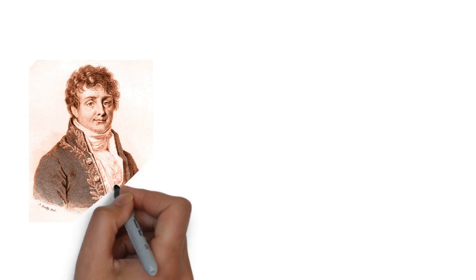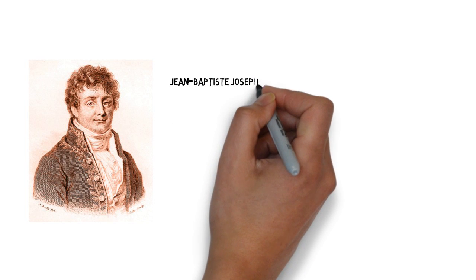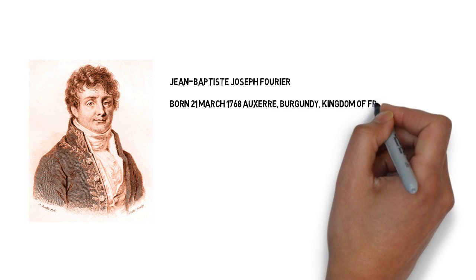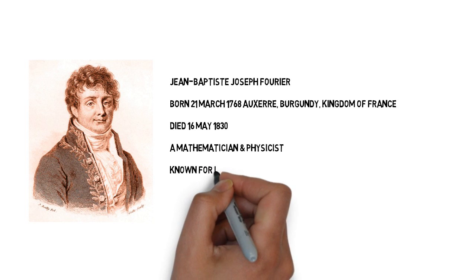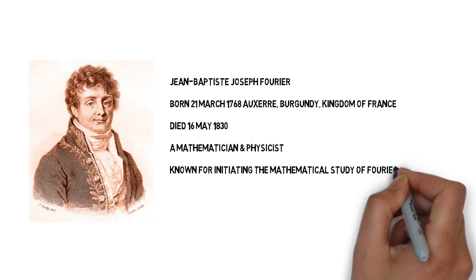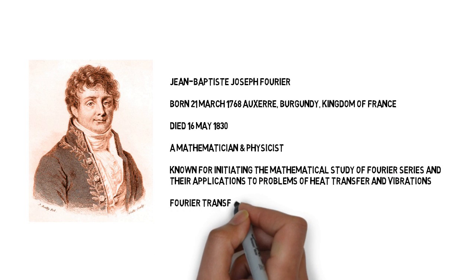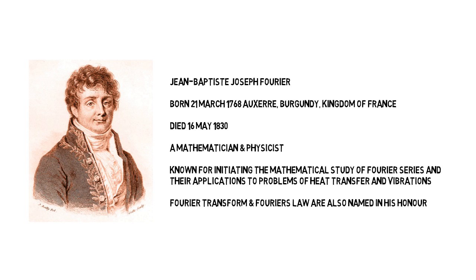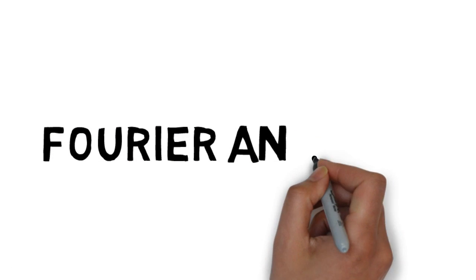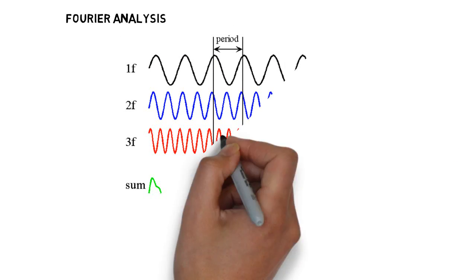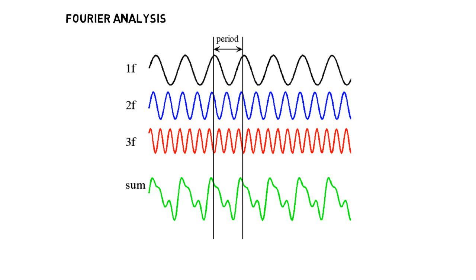Let us first introduce you to a mathematician named Jean-Baptiste Joseph Fourier. He is known for initiating the mathematical study of Fourier series and its applications. Fourier analysis has been extensively applied for signal processing, including filtering and feature extraction for pattern identification. In Fourier analysis, a signal is decomposed into its constituent sine waves. A periodic signal can then be described in terms of a series of harmonically related sine and cosine waves. The harmonic part of the model is a Fourier series representation of a speech signal's periodic components. When a non-periodic component is sampled, its Fourier transform becomes a periodic and continuous function of frequency.